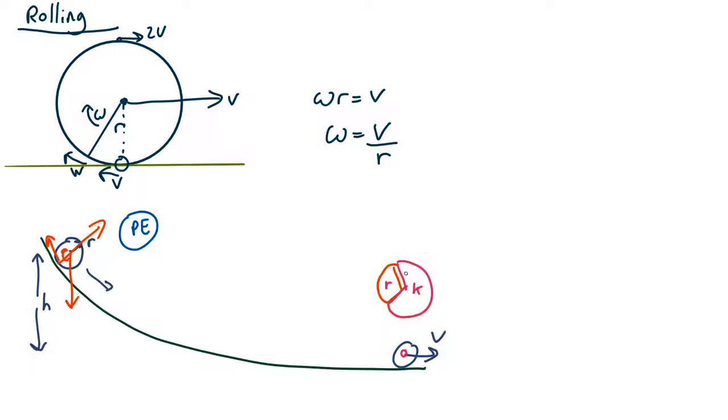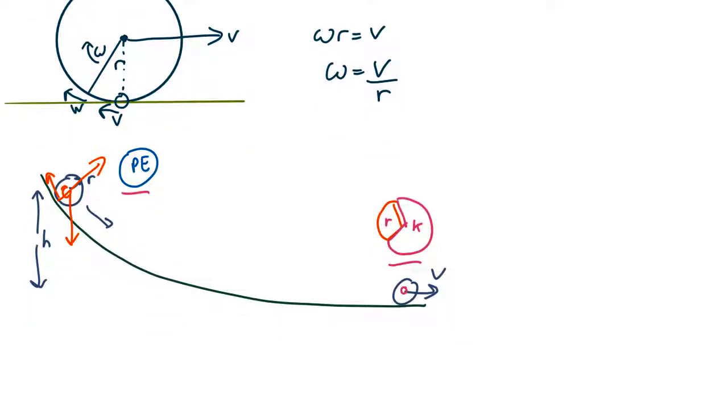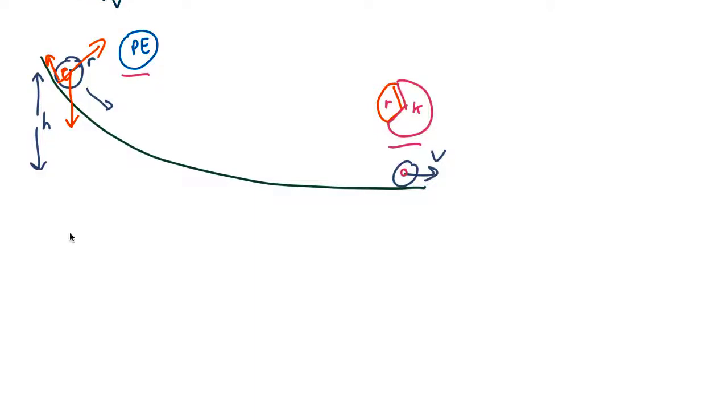So as usual for energy problems what we do is we write down an equation for the energy at the beginning, the equation for the energy at the end and set them equal to each other. So at the beginning the energy is just mgh if we define potential energy zero down here at the bottom which is probably a reasonable thing to do. It doesn't matter where you pick your zero point the answer will come out the same. Okay now what's the energy over here?